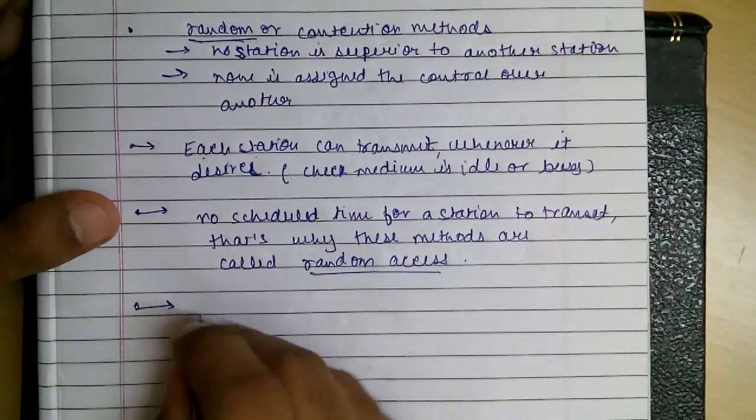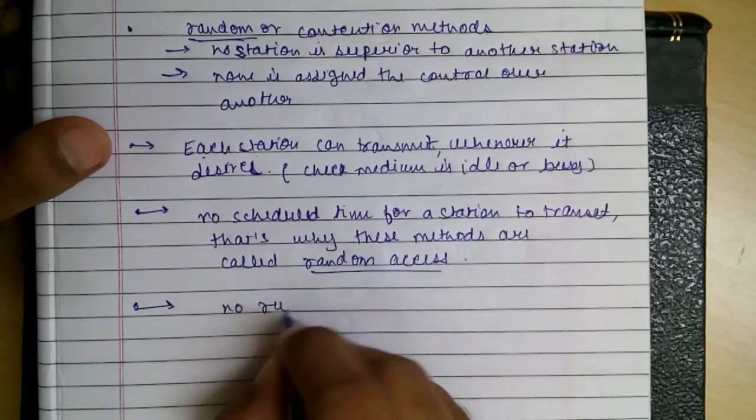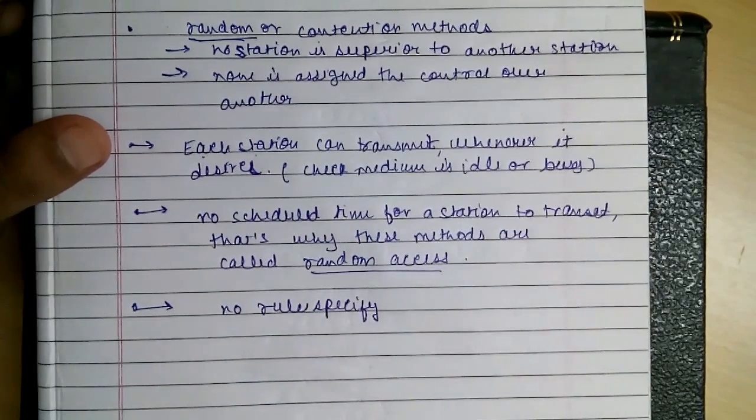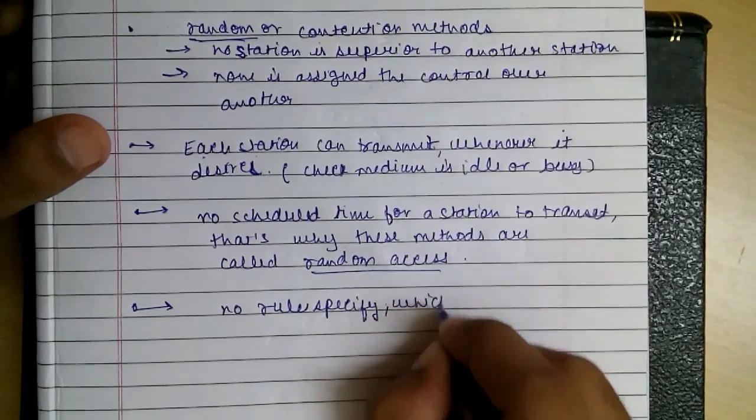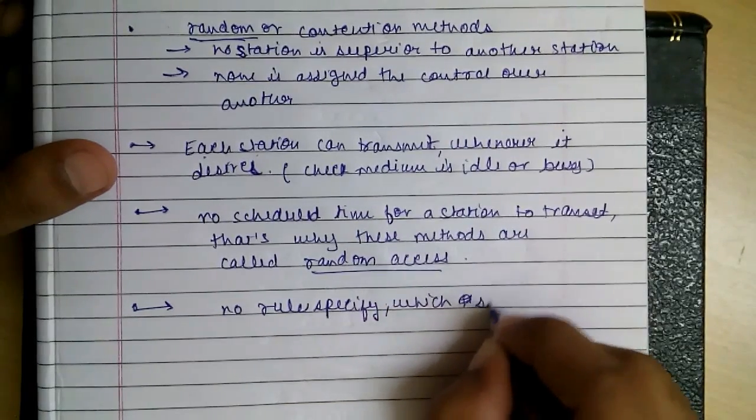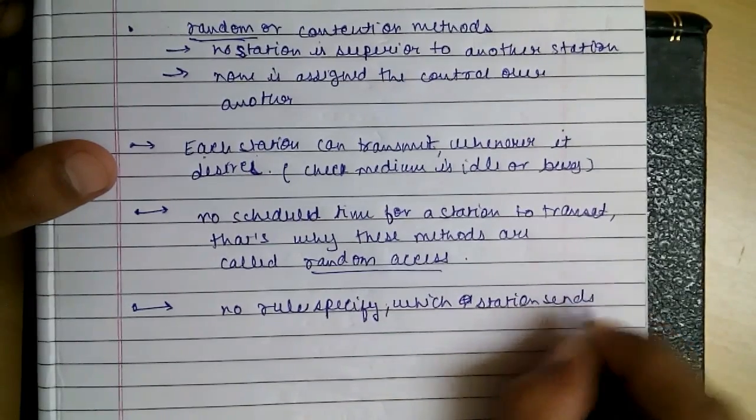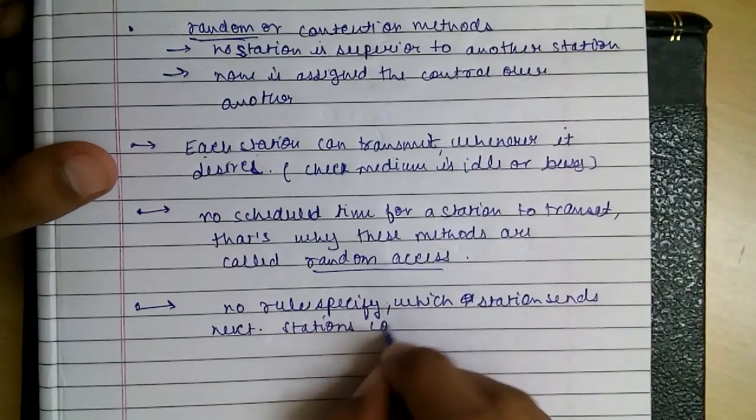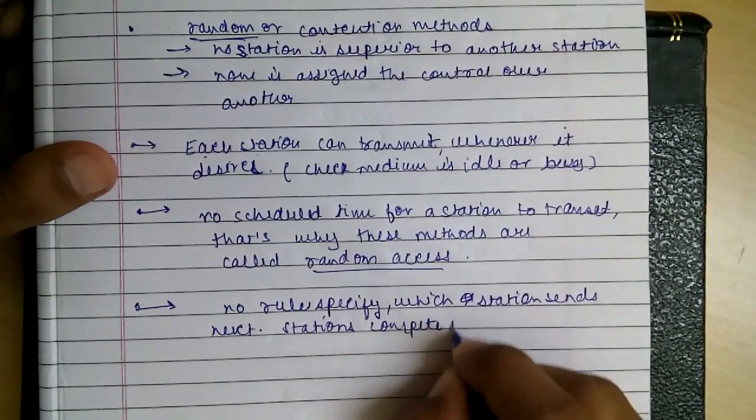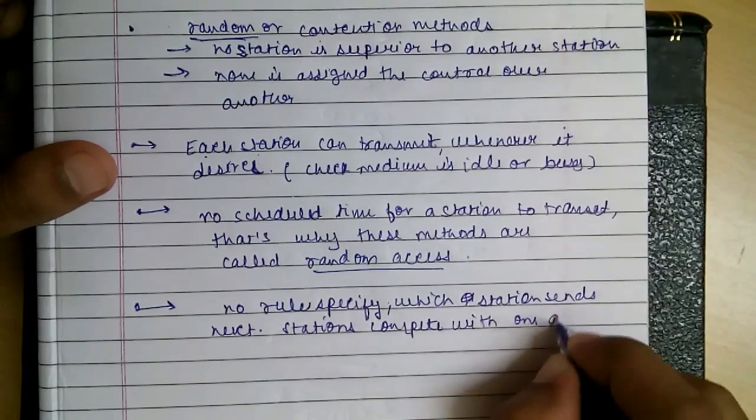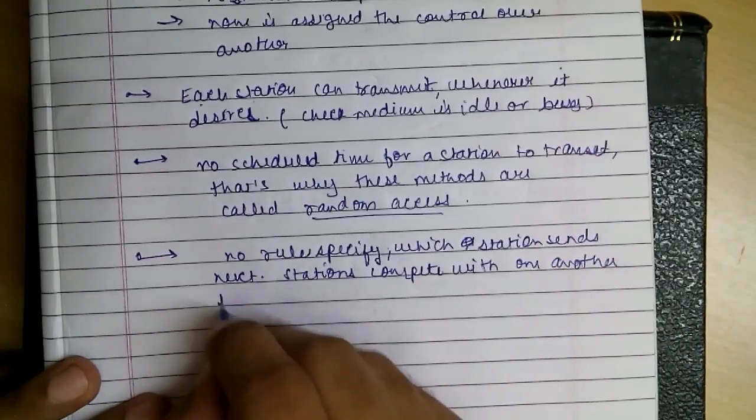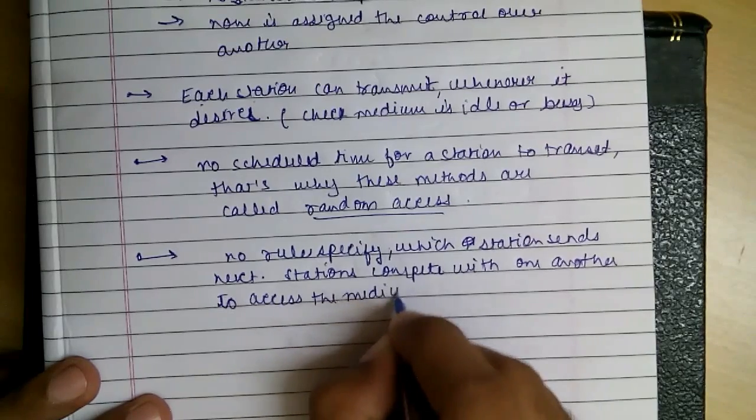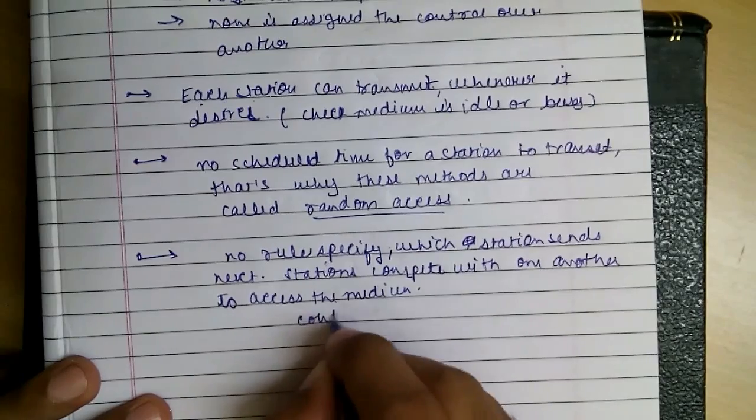Another thing: no rules specify in this type of protocol which station will send the next frame. So what happens is the stations compete with one another to access the medium, and this is the reason why they are known as contention methods.